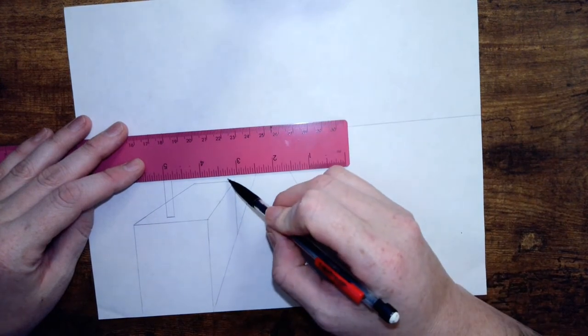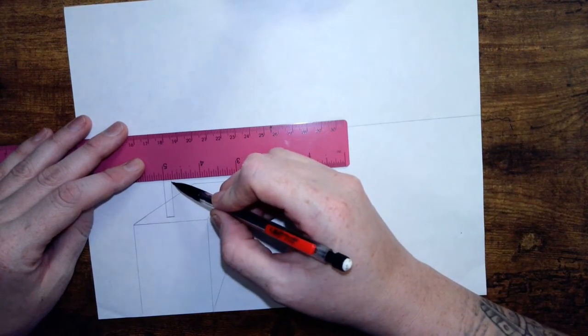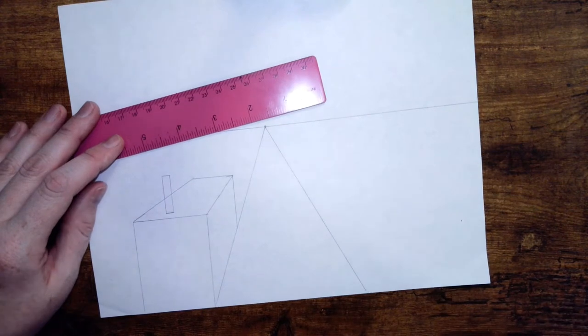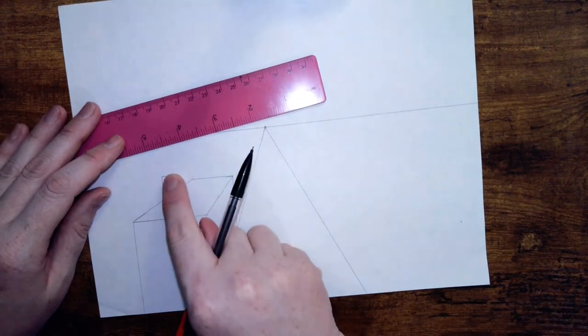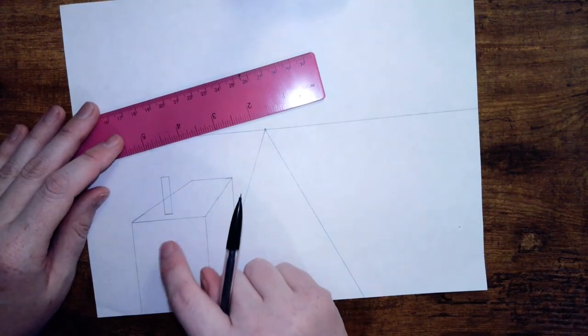Again, making sure it's parallel, use this line for reference. So now we just have what looks like a really tall, skinny rectangle on top of this building.